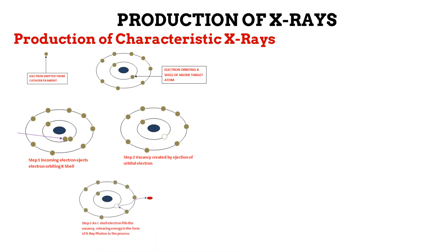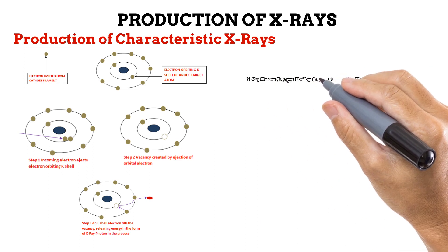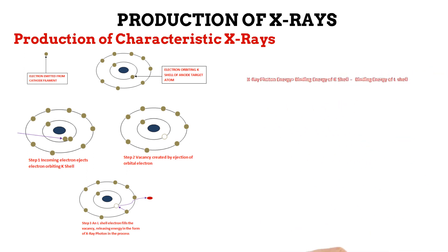This vacancy is then filled by an electron that is orbiting the outer L-shell of the anode's atom. As this vacancy is being filled, energy is given off in the form of an X-ray photon. The energy of the X-ray photon produced is equal to the binding energy of the K-shell minus the binding energy of the L-shell.